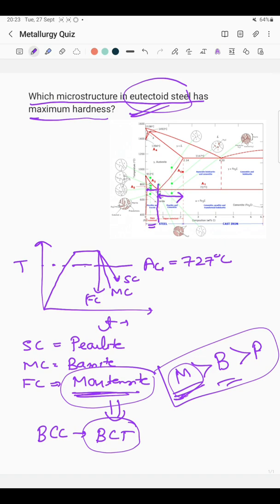And another reason will be that there will be finer microstructure formed in martensite. There will be the lath and plate type of microstructure, which is finer as compared to bainite and pearlite.